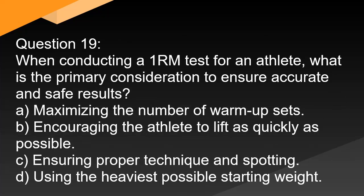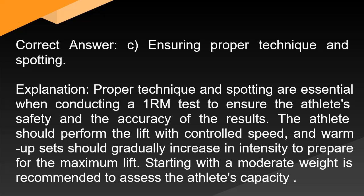Question 19: When conducting a 1RM test for an athlete, what is the primary consideration to ensure accurate and safe results? A. Maximizing the number of warm-up sets. B. Encouraging the athlete to lift as quickly as possible. C. Ensuring proper technique and spotting. D. Using the heaviest possible starting weight. Correct answer: C. Ensuring proper technique and spotting. Proper technique and spotting are essential when conducting a 1RM test to ensure the athlete's safety and the accuracy of the results. The athlete should perform the lift with controlled speed, and warm-up sets should gradually increase in intensity to prepare for the maximum lift. Starting with a moderate weight is recommended to assess the athlete's capacity.